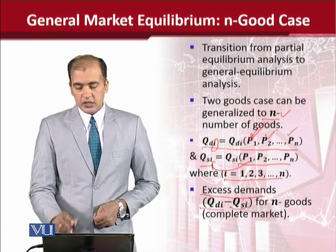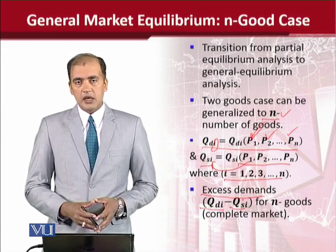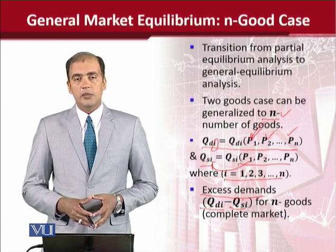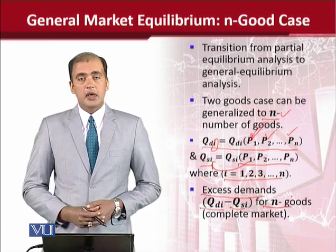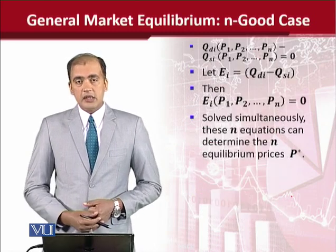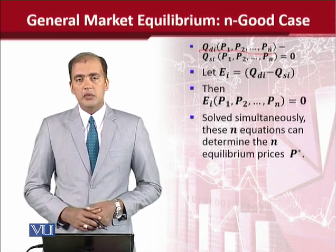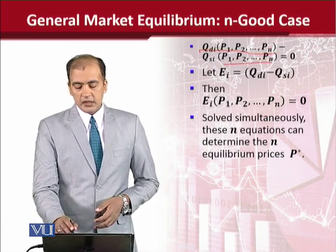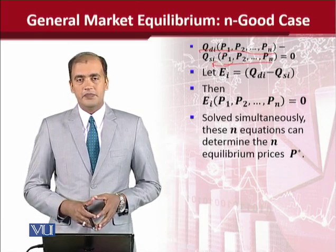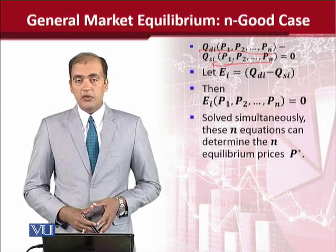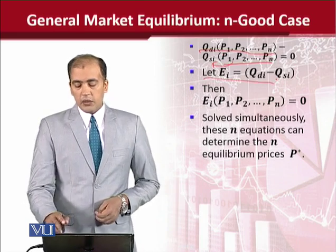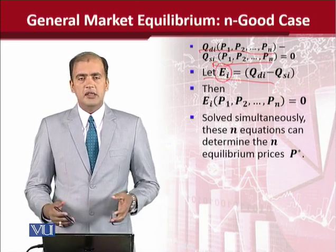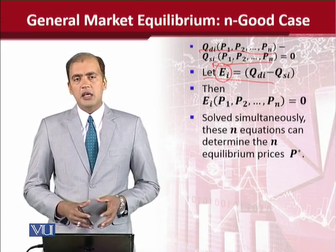You can see QDi minus QSi, which shows the difference between the two values. If it is equal to zero, then there is no excess demand — it is equilibrium. If it is greater than zero, then it is excess demand. If it is less than zero, then it is excess supply. For a better representation, we can use the expression ei, where e shows the excess demand.